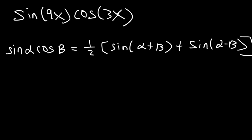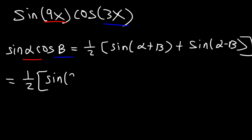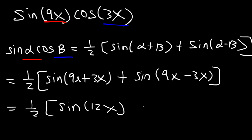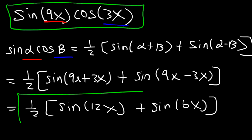Go ahead and use that equation to simplify the expression. First, we need to identify the two angles: alpha is 9x and beta is 3x. So this is going to be equal to one half sine(9x plus 3x) plus sine(9x minus 3x). Now 9x plus 3x is 12x, and 9x minus 3x is 6x. So sine 9x cosine 3x equals one half times sine 12x plus sine 6x.